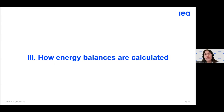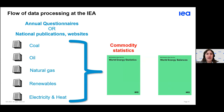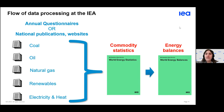Now that we know what an energy balance is and what it's used for, how is an energy balance calculated? Over the past few days you've seen how energy data is collected for five different fuels, either through annual questionnaires or national statistics publications and websites. These can be combined into commodity statistics — at the IEA we call these the World Energy Statistics — presented in physical terms, such as kilotons for coal. We then need to apply conversion factors to convert the commodity statistics from physical units into energy units, which gives us the energy balances.